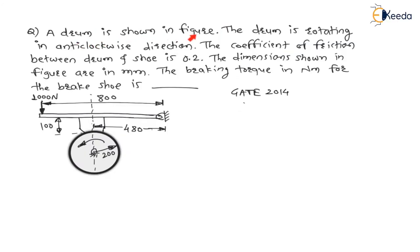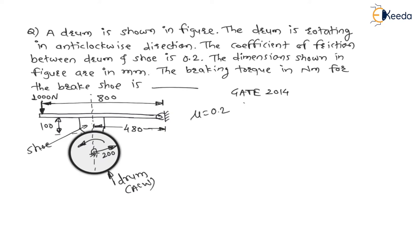The drum shown in the figure is rotating in anticlockwise direction. The coefficient of friction between the drum and shoe is 0.2. Here is the shoe, and between drum and shoe at this contacting surface, the coefficient of friction is 0.2.